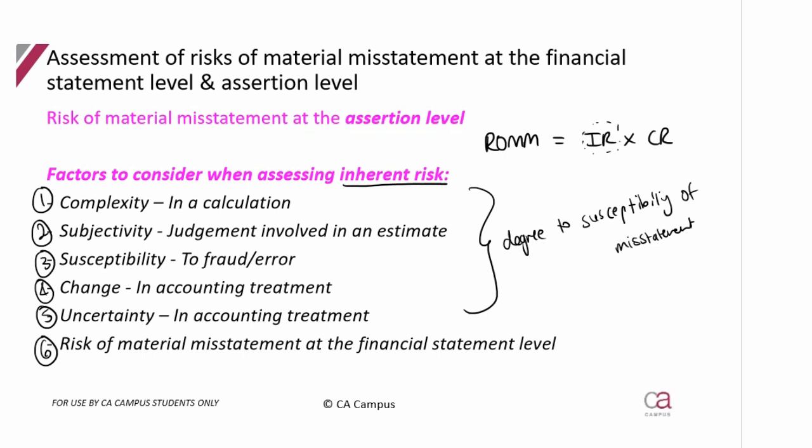It's a massive assessment the standard now requires us to do when considering inherent risk at the assertion level. But if there's no complexity in determining this amount and no subjectivity — for example, if IFRS says this is how you determine repairs and maintenance — then the inherent risk is low. However, if there's any of these factors — complexity, subjectivity, susceptibility, change, uncertainty — or there's risk at the financial statement level that could affect this balance or transaction, our inherent risk goes up.